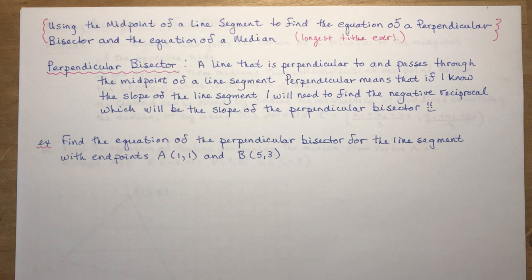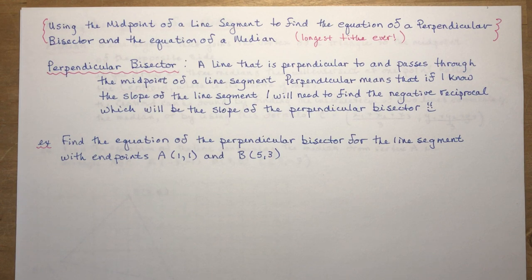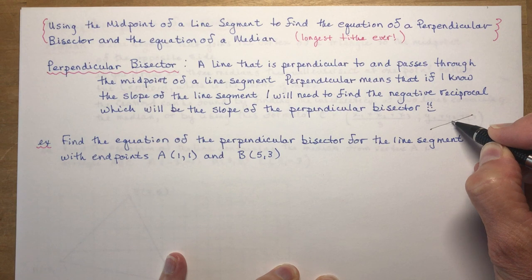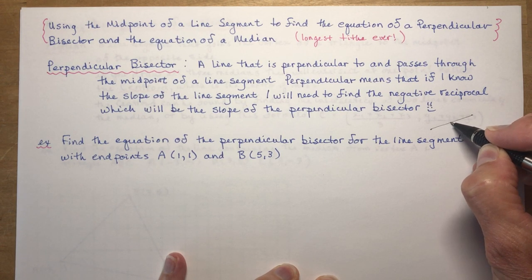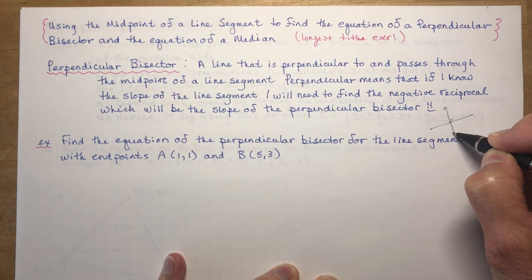Today we're going to do perpendicular bisectors first and then the equation of a line passing through a median. A perpendicular bisector is a line that is perpendicular to and passes through the midpoint of a line segment — that's where we get to use the midpoint. Perpendicular means that if I know the slope of the line segment, I will need to find the negative reciprocal, which will be the slope of the perpendicular bisector. We want to find the line that is perpendicular to this and passing right through the middle of it.